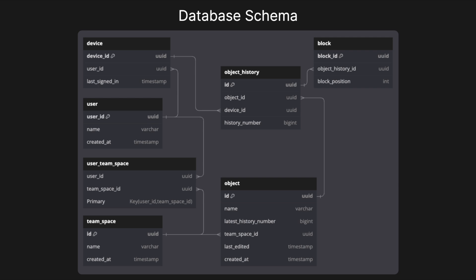Looking at our database schema — this is a bare-bones schema covering just the core tables. We have a User object with a user ID, name, and created-at timestamp. There's a one-to-many relationship with Devices, where a user can have many devices. We also have a Team Space — similar to a shared drive — with an ID, name, and created-at. A UserTeamSpace table facilitates the many-to-many relationship between users and team spaces. Our Object table represents a file, with an ID, name, and a latest history number for versioning.